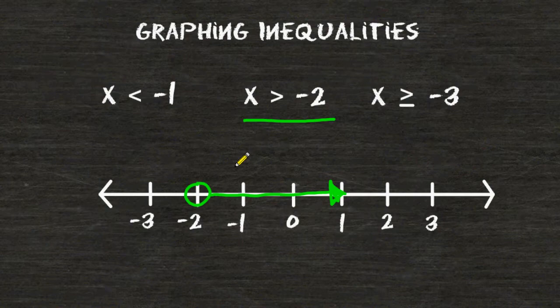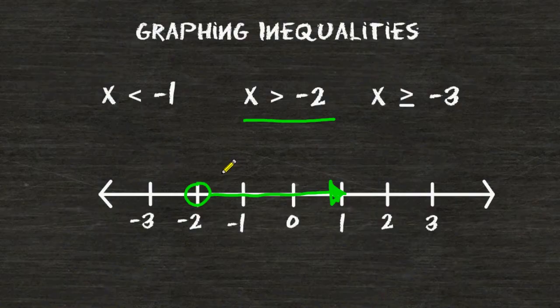This graph really just means that the value of x can be any number that we want to as long as that value is greater than negative 2.